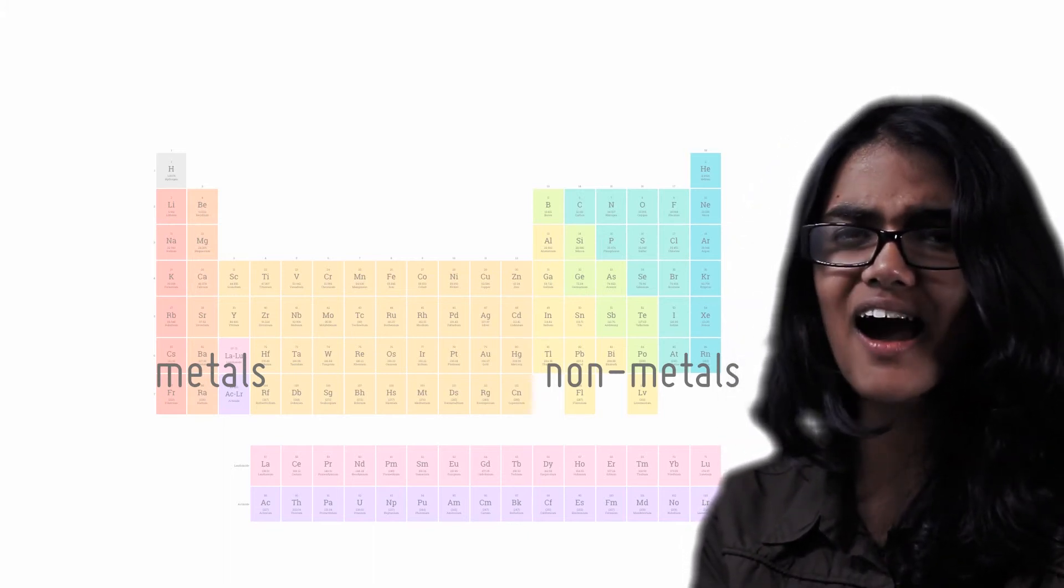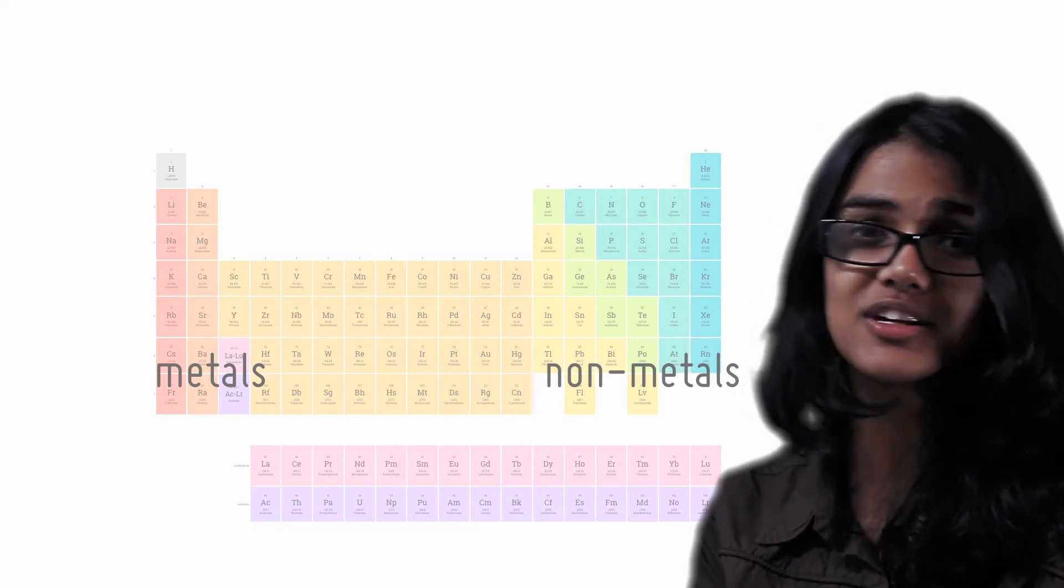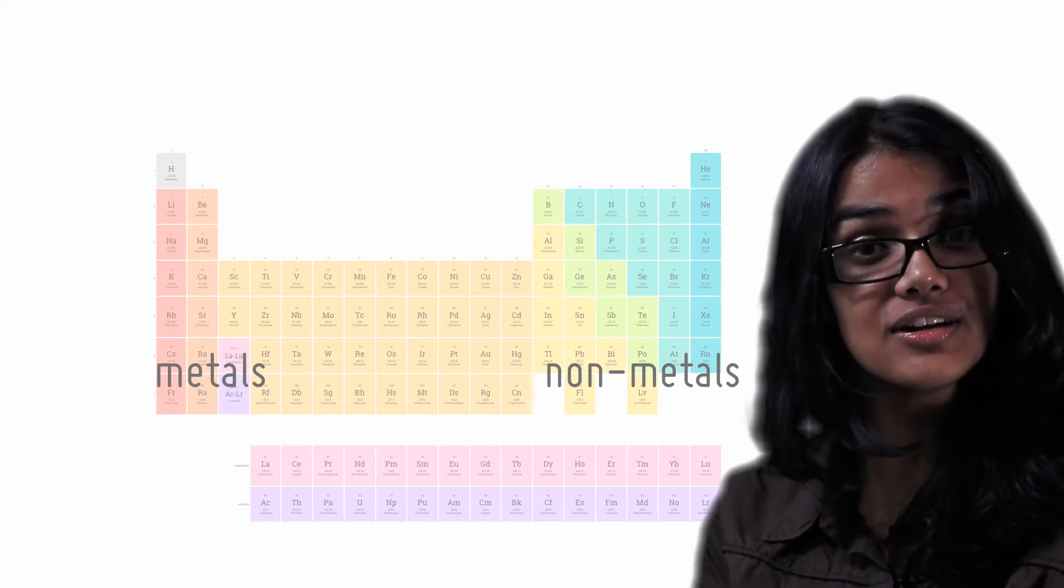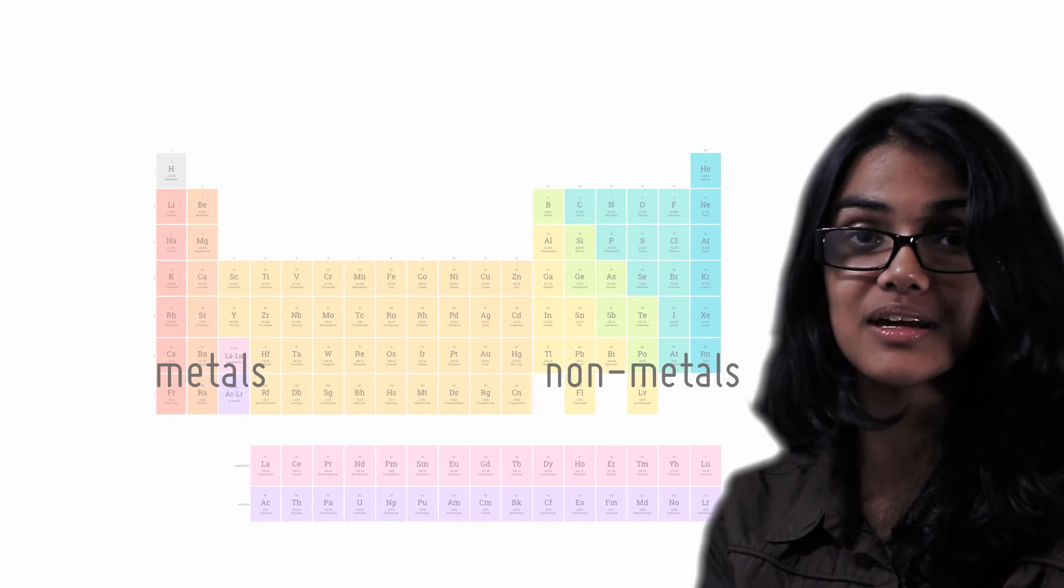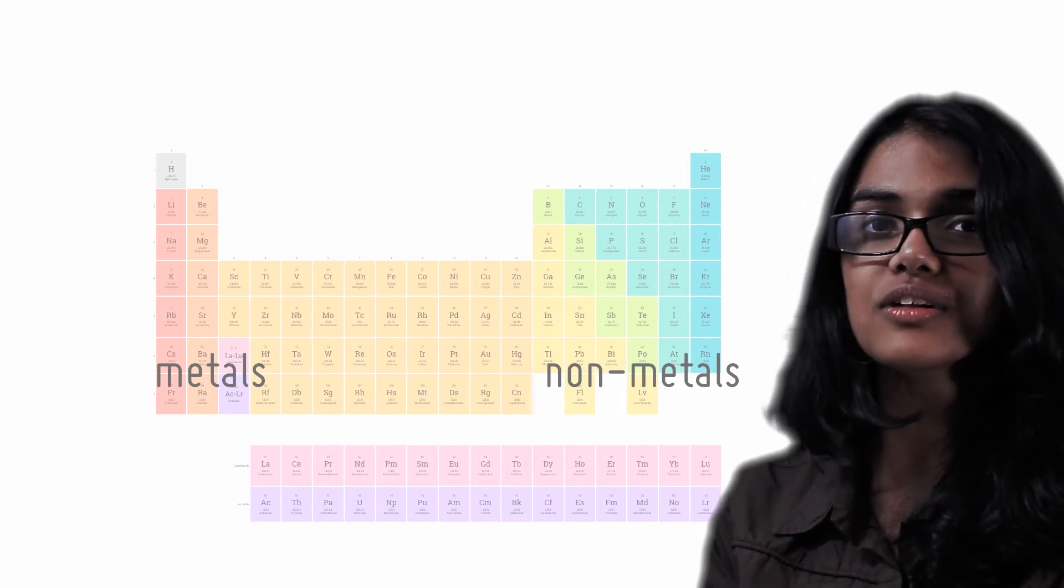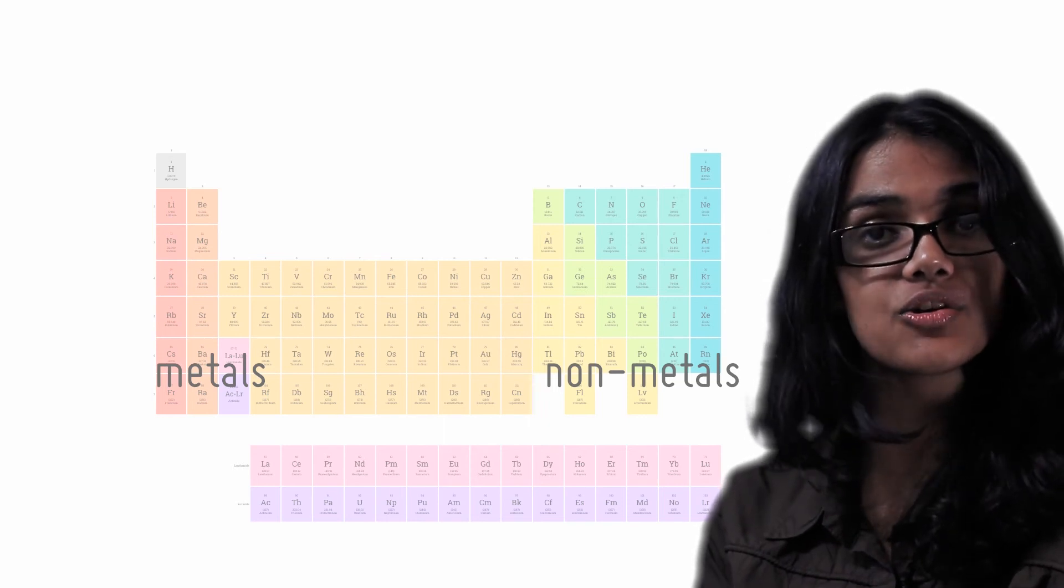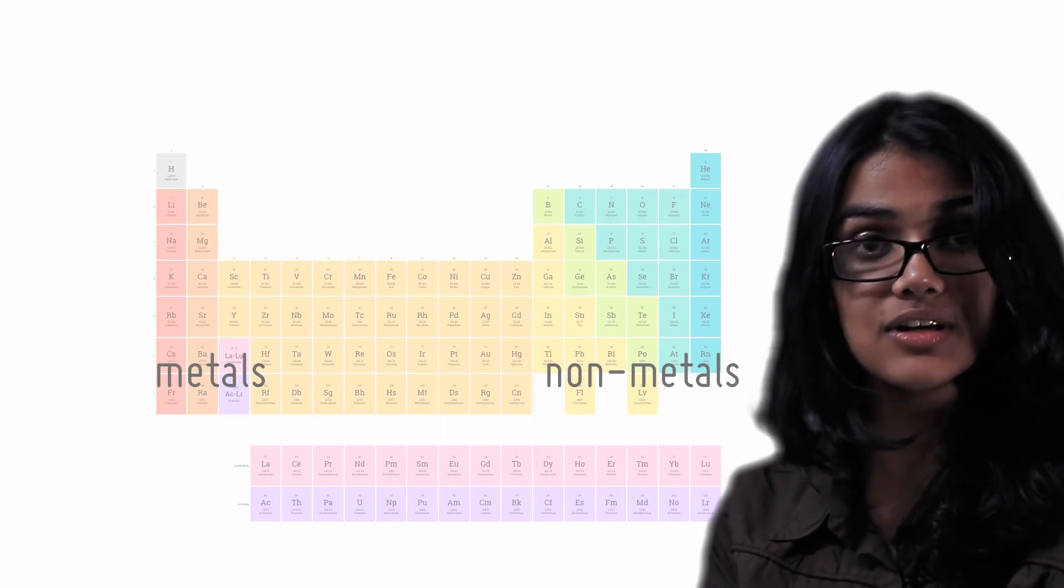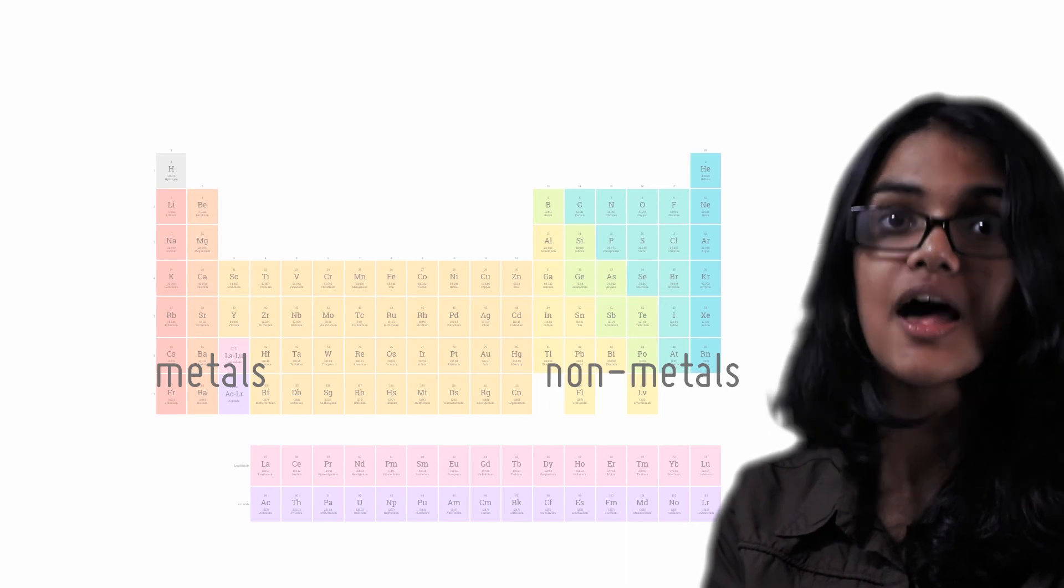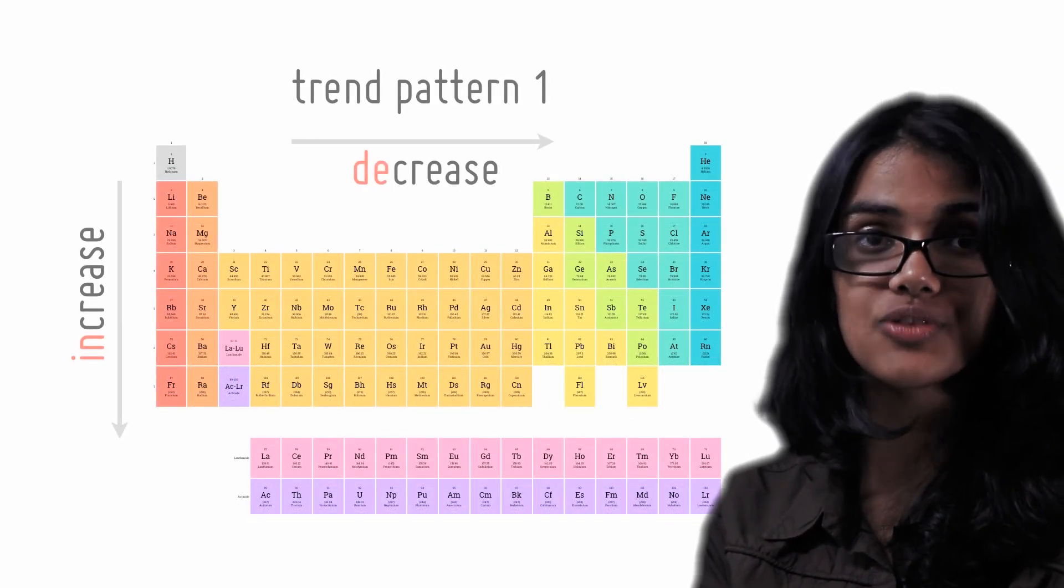Atomic properties kind of suck because you have to memorize them. There's really no way around that. However, there is a trick that you can use to make this a bit easier. There are only two kinds of trends as it comes to atomic properties. Trend 1 is increasing down while decreasing across and trend 2 is decreasing down while increasing across. Metal property follows trend 1.